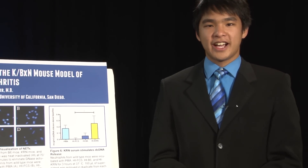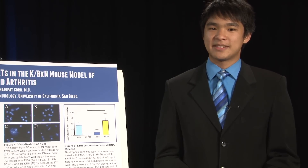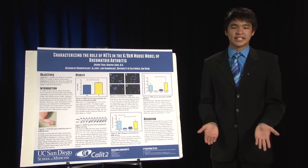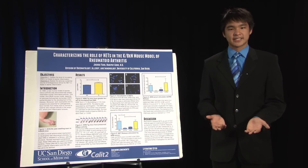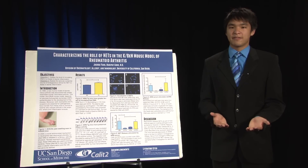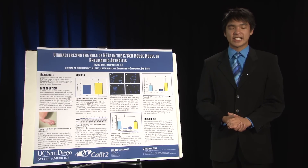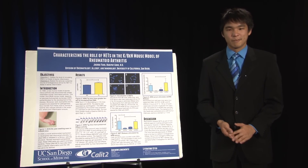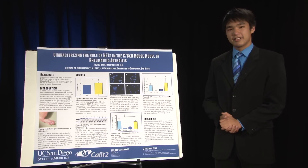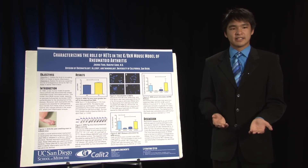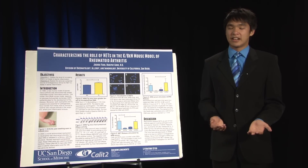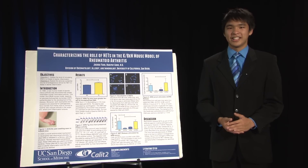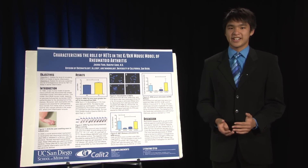Overall, we find that there is some factor in the KBXN serum that causes NET release, but this factor has yet to be identified. We find that KBXN serum causes increased levels of NET release over wild-type mice serum. Additionally, we find that KBXN plasma has increased levels of circulating free DNA. Whether this DNA plays a beneficial or detrimental role in the pathogenesis of this mouse model of rheumatoid arthritis also remains to be determined.